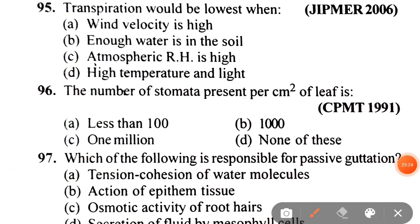Next: transpiration would be lowest when A. Wind velocity is high, B. Enough water is in the soil, C. Atmospheric RH is high, D. High temperature and light. The correct answer is C — when atmospheric relative humidity is high.